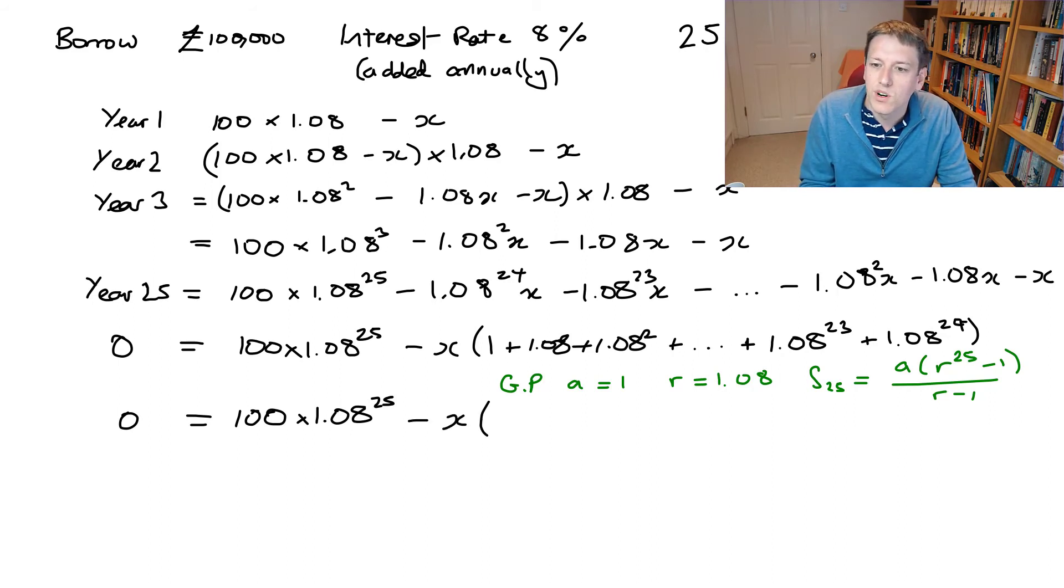So my A is 1, so I don't even need the 1 in the formula here. So I'm just going to have x times 1.08 to the 25 minus 1 divided by 1.08 minus 1.